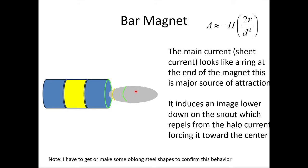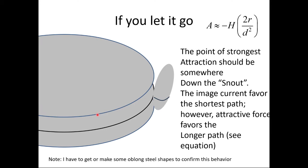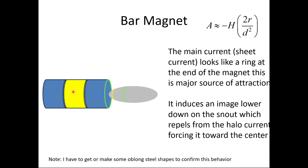If you put an oblong object at the end of a bar magnet, remember a bar magnet has a big sheet current — the main current — along the center. The main current can be the edge current of a disc magnet or the sheet current at the center of a bar magnet. The halo current forces this object to pinpoint toward the center. Because this current is opposite in direction to the halo current, the halo current pushes the object toward center. Size matters here — smaller versus larger objects behave differently.